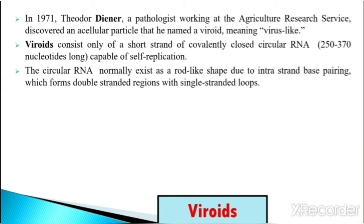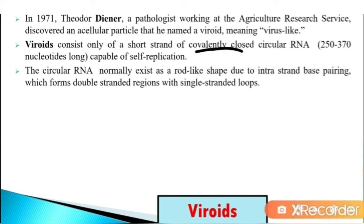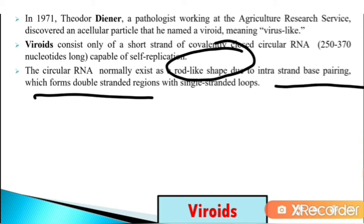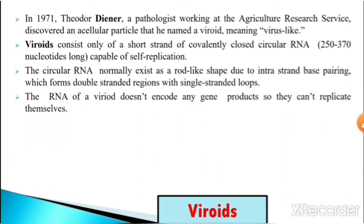The circular RNA normally exists as a rod-like shape due to intrastrand base pairing, which forms double-stranded regions with single-stranded loops. The RNA of a viroid does not encode any gene products, so it cannot replicate itself independently.